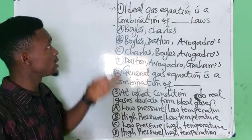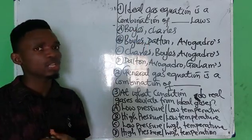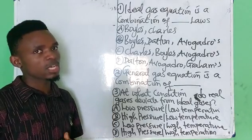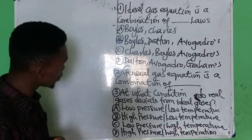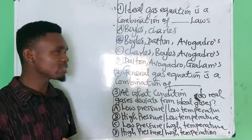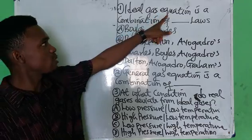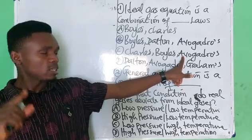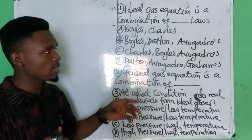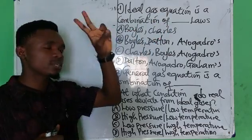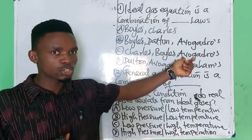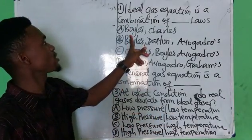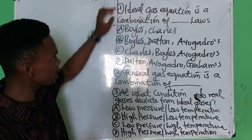First question: the ideal gas equation is a combination of which laws? When you see this kind of question, many students are in a hurry to pick options like Boyle's law and Charles's law. Please do not do that. The ideal gas equation is a combination of Charles's law, Boyle's law, and Avogadro's law. So the answer to question one is C, and to question two is also A.